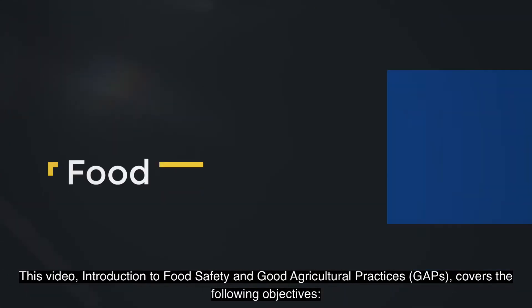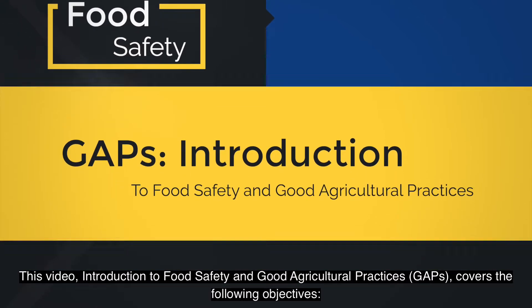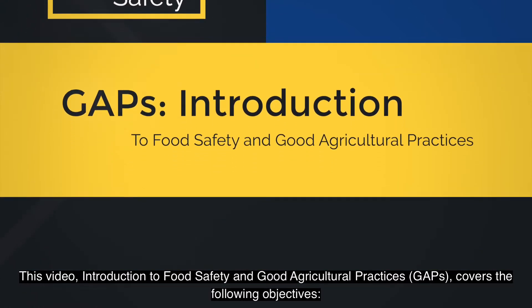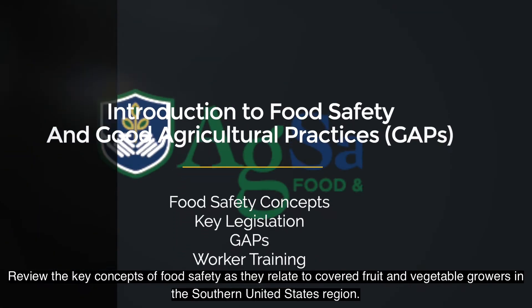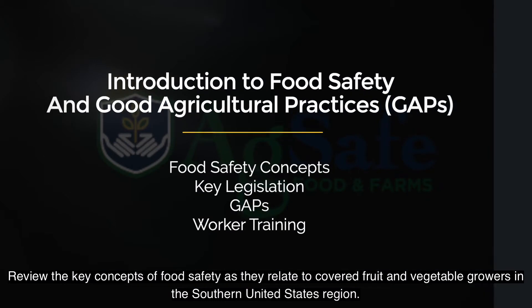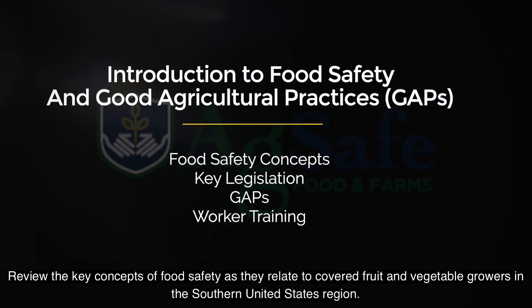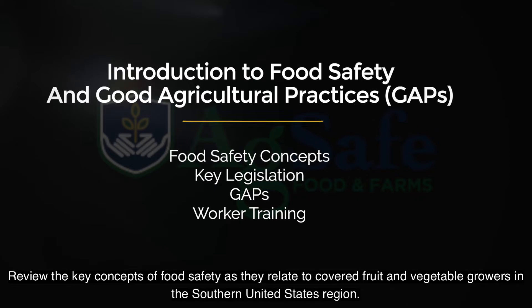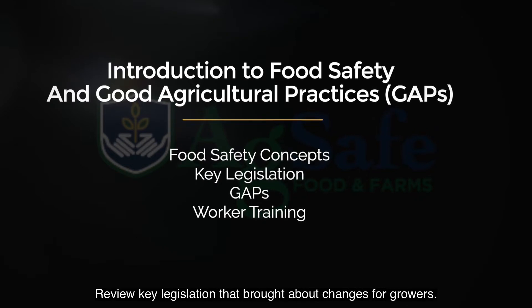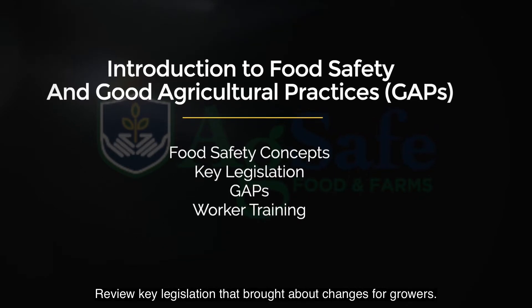This video, Introduction to Food Safety and Good Agricultural Practices (GAPs), covers the following objectives: review the key concepts of food safety as they relate to covered fruit and vegetable growers in the southern United States region, and review key legislation that brought about changes for growers.